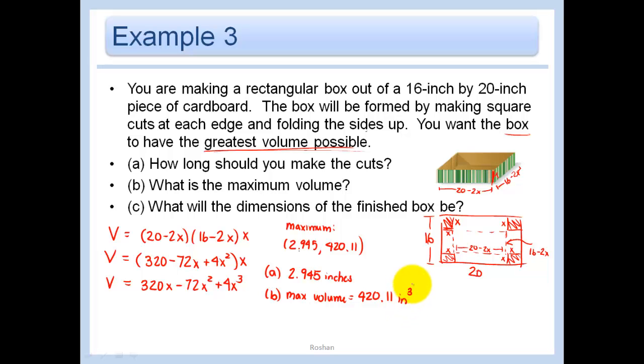Because we're doing length times width times height. That would be inches times inches times inches, which is inches cubed. And then it says, what is the dimensions of the finished box? So why don't we go ahead and round this just to make this easier. About 3 inches. About 420. And then let's just say that this side is 20 minus 2 times 3, which is 20 minus 6, or 14. The other side is 16 minus 2 times 3, which is 16 minus 6, or 10. So our final box would be 14 inches by 10 inches by 3 inches.